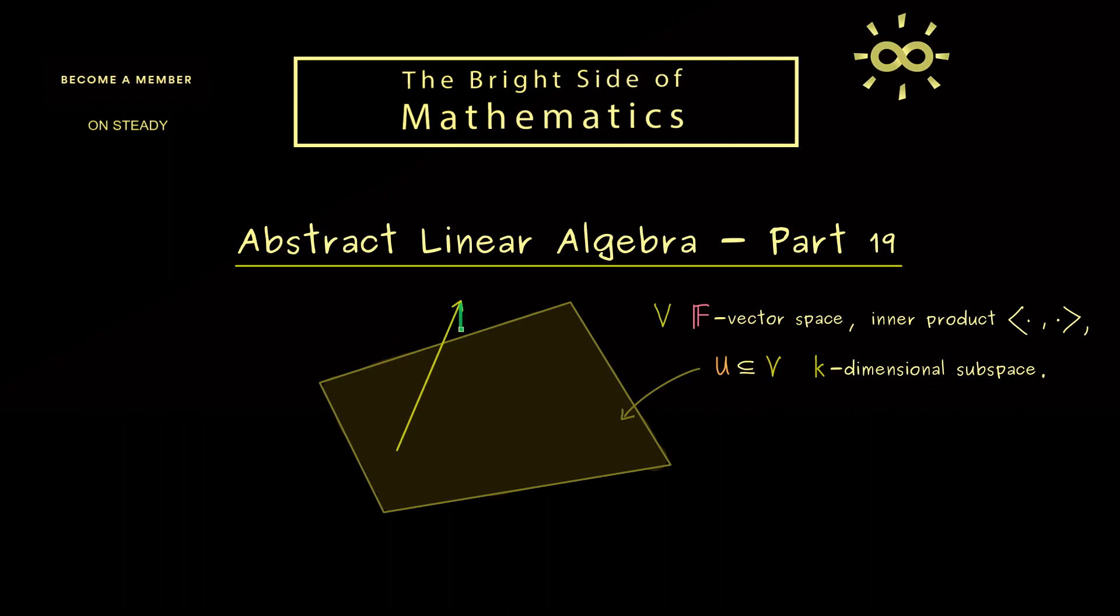You might remember that every vector x in V can be projected in an orthogonal way onto the subspace U. And indeed with the last videos we have already solved this problem. So now we can calculate this orthogonal projection. And you also might remember that the common name we choose for this vector in U is x restricted to U.